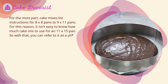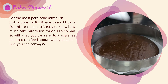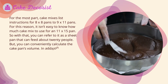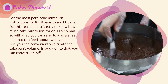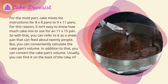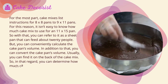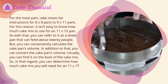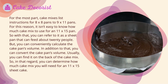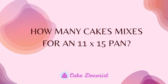You can refer to an 11 by 15 pan as a sheet pan that can feed about 20 people. You can conveniently calculate the cake pan's volume and also convert it. Usually you can find this information on the back of the cake mix, and in that regard you can determine how much cake mix you will need for an 11 by 15 sheet cake.